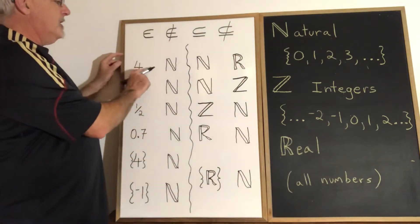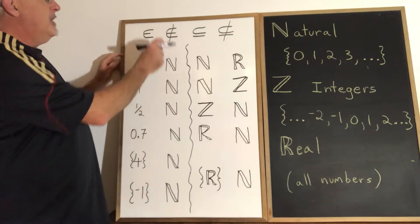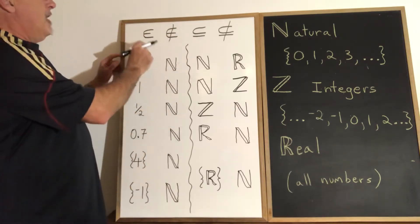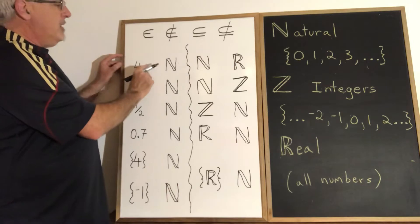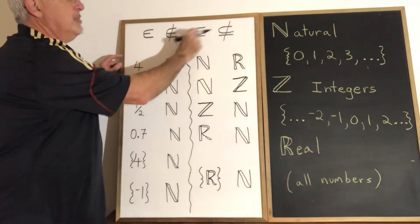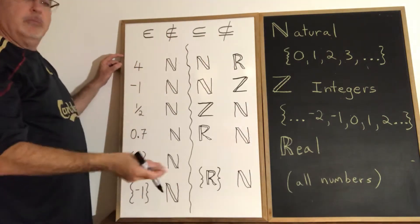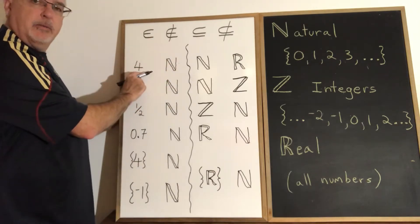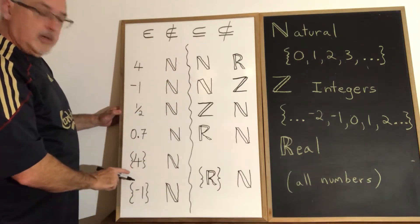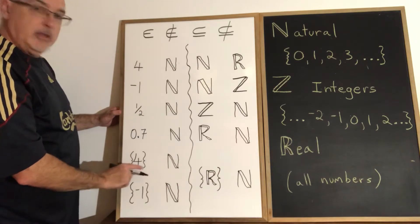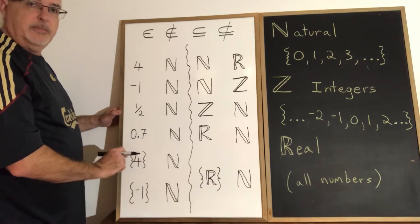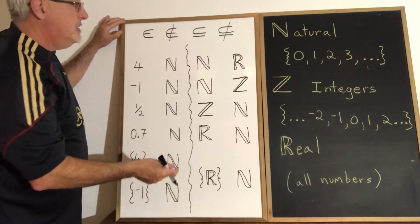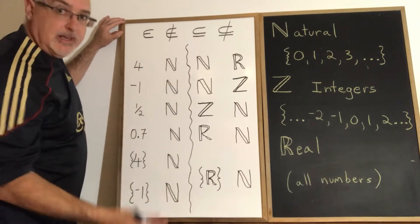Let's start with the first statement: Is four an element or a subset of natural numbers? What I want to focus on is how we realize which symbol we need. Four is not a set — if it was a set, it would be written in notation showing there is a set that contains four. So four is not a subset of natural numbers because it's not a set.